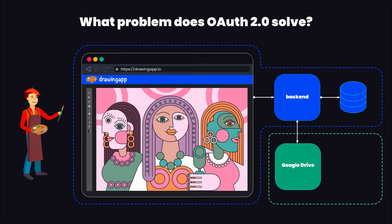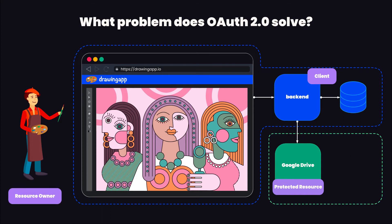OAuth is all about giving limited access to APIs, and to understand how it really works we first need to understand OAuth terminology. The API we want to get access to — in this case the Google Drive API — is called the resource server or the protected resource. From Google's perspective, the drawing application is a third-party application which is called the client. Our user — our modern-day Picasso — is the resource owner because he owns the Google Drive account we want to access.